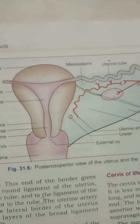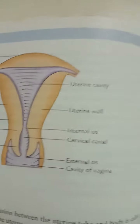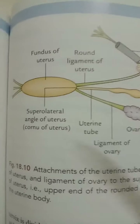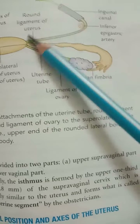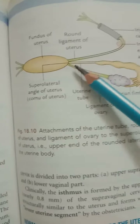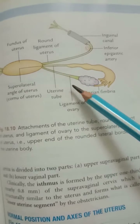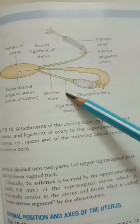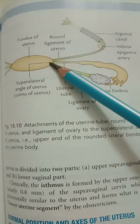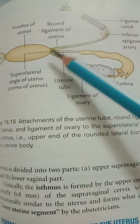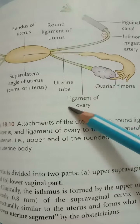The round ligament of the uterus is attached anteroinferior to the uterine tube. The ligament of the ovary is attached posteroinferior to the tube. So from both lateral sides, these two ligaments are attached: the round ligament of the uterus and the ligament of the ovary.